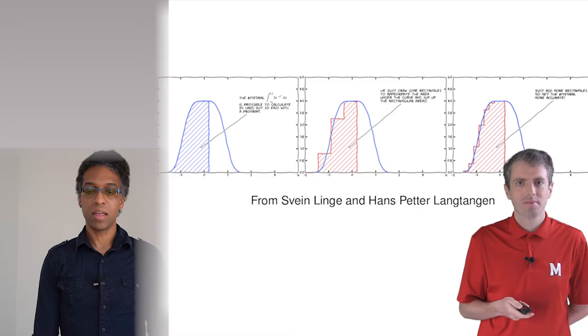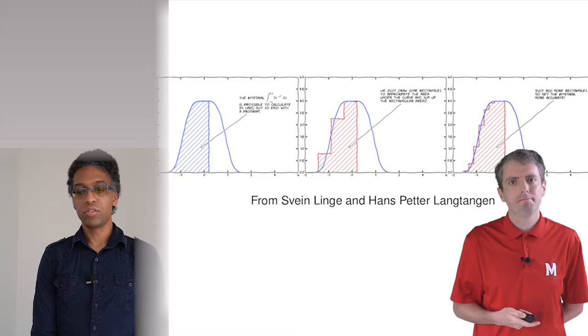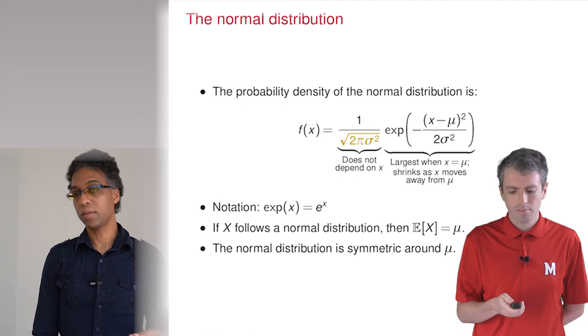So this is where calculus comes in. The rectangles will become infinitely thin. And then this becomes an integral. That's right. Although we won't actually be doing integrals in this class, it's useful to understand how integrals relate to probabilities. So that's where the bit under the square root comes in. That makes sure everything normalizes to 1.